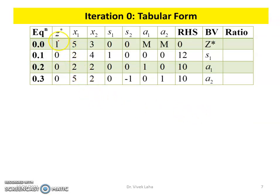In the tabular form, the column associated with Z* is [1,0,0,0], with S₁ is [0,1,0,0], with A₁ is [0,0,1,0], and with A₂ is [0,0,0,1]. However, due to the presence of the large penalties, it is not in the standard identity matrix form, so we must perform Gaussian eliminations to convert it into canonical form.